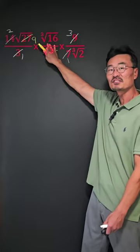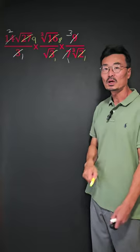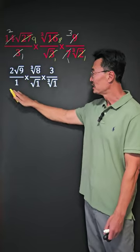Next, when we have the cube root of 16 and cube root of 2, we could reduce this into an 8 and that into a 1, where we're left with this.